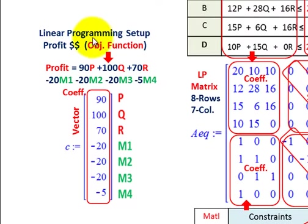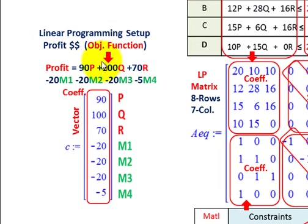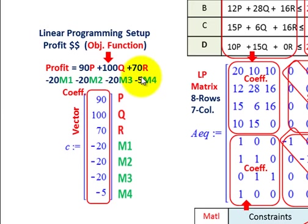For the linear programming setup, first you set up a vector for the profit objective function. Just take your coefficients from the objective function and enter them in vector form: the three product coefficients — 90, 100, 70 — and then the material coefficients M1 through M4. Remember to put in the minus sign because you're subtracting that material cost from your revenue.